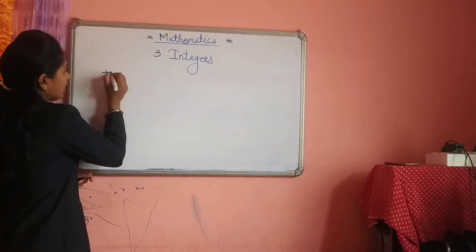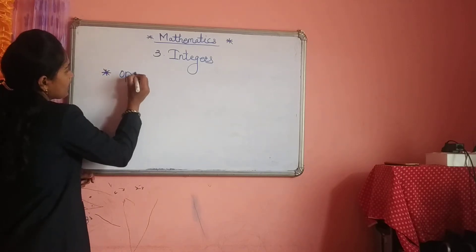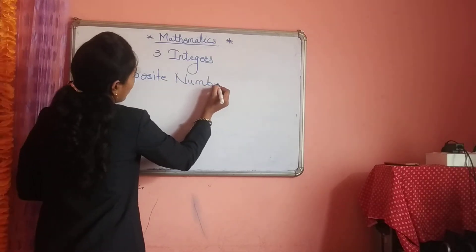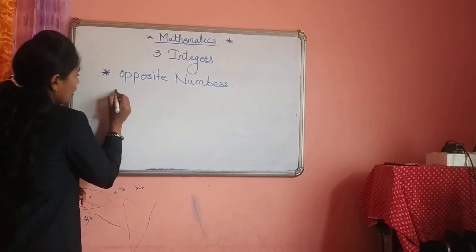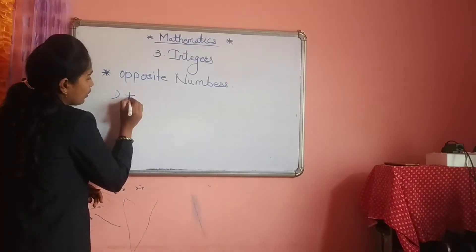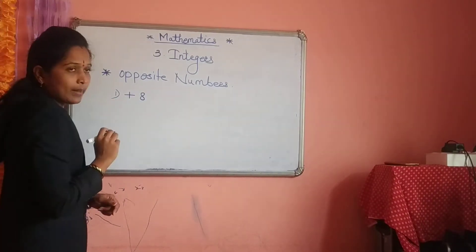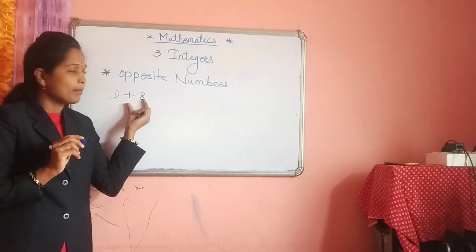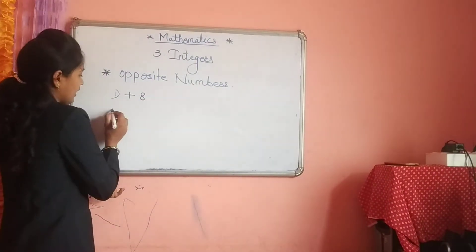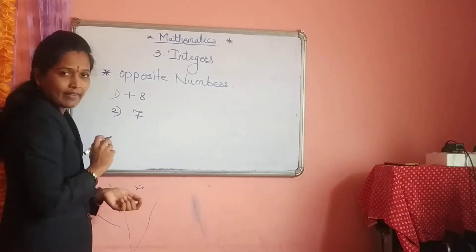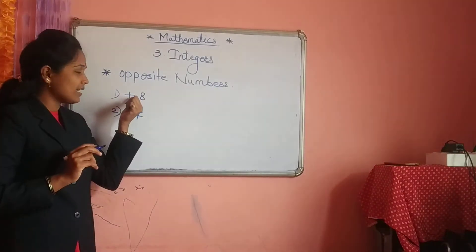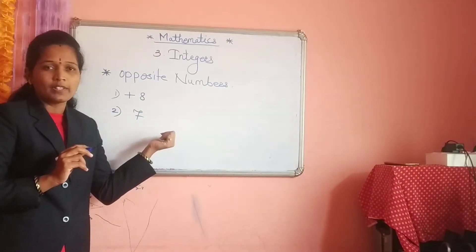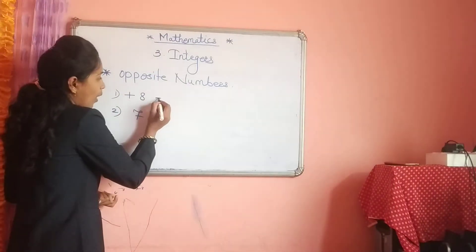Pay attention to what is the meaning of opposite numbers. Opposite numbers — suppose the number plus 8 is given. Whenever the positive sign is given in front of the number, or no sign is given — for example, just the number 7 — whether the positive sign is written or not, it is called a positive number. So what is the meaning of opposite number?